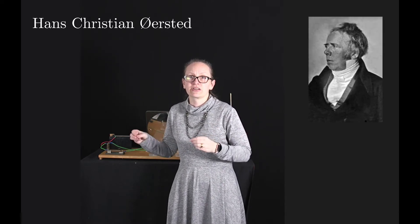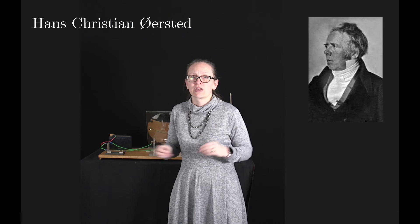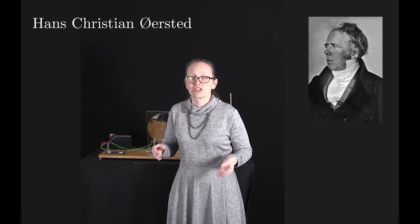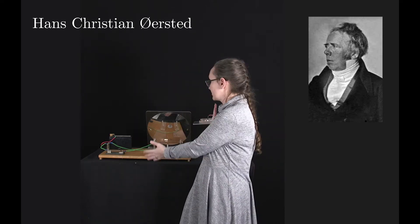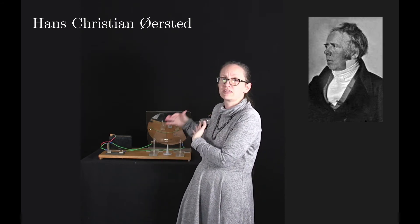Some of the very first evidence of the deep links between electricity and magnetism was discovered by the Danish physicist Hans Christian Ørsted in 1820. The story goes that he was giving a public lecture where he had some demonstrations somewhat similar to these ones.